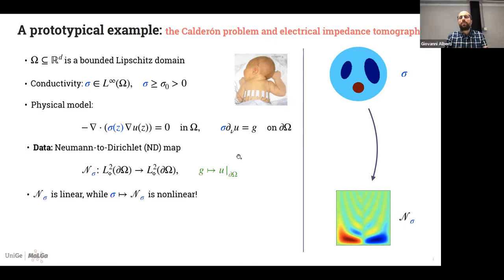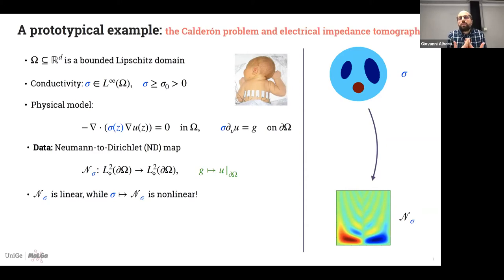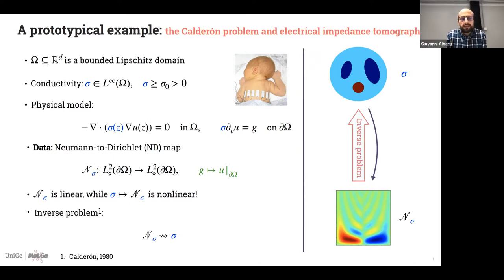This is my data, represented in a simple setting by this image. The map N_sigma is linear from these two spaces simply because this PDE is linear. However, the map from sigma to N_sigma is highly nonlinear, because the PDE in sigma is highly nonlinear. The inverse problem — exactly the Calderón problem studied over the last 40 years — is to go back: given N_sigma, the Neumann-to-Dirichlet data, we want to reconstruct sigma.